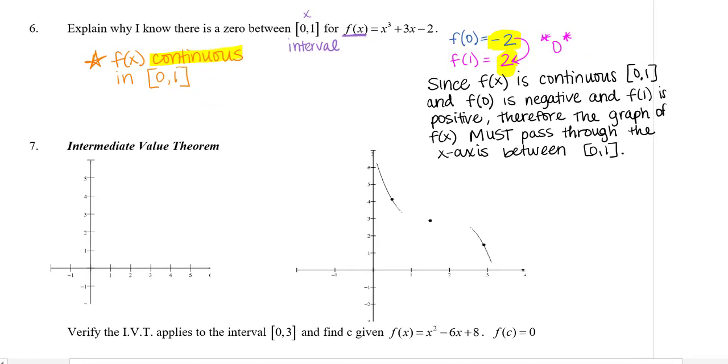Alright, so I just wrote that out for you. Since f of x is continuous between 0 and 1, and f of 0 is negative, like we talked about, and f of 1 is positive, therefore the graph of f of x must pass through the x-axis between that interval.